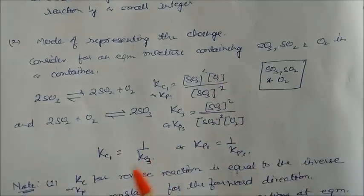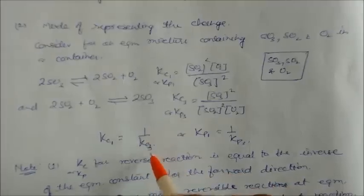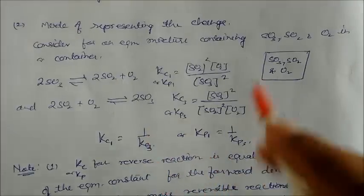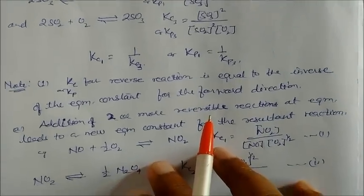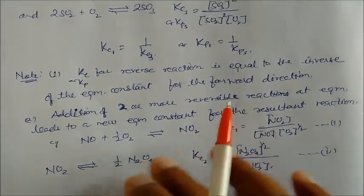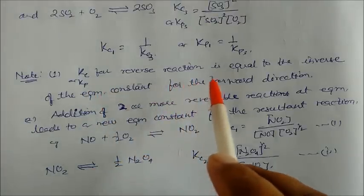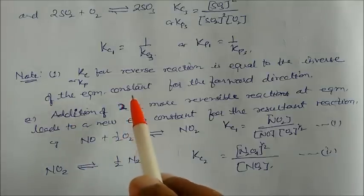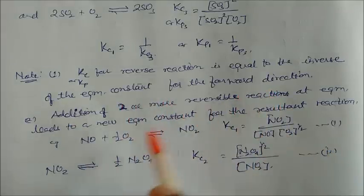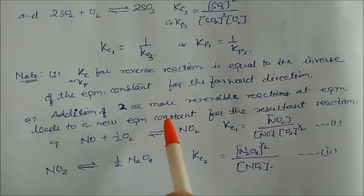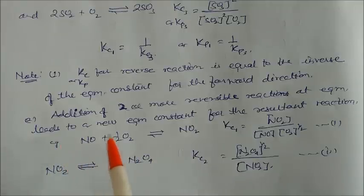Comparing these, Kc1 is equal to the inverse of Kc3, and Kp1 is the inverse of Kp3. We can conclude that the equilibrium constant for the reverse reaction is equal to the inverse of the equilibrium constant for the forward reaction. Additionally, adding two or more reactions at equilibrium leads to a new equilibrium constant for the resultant reaction.